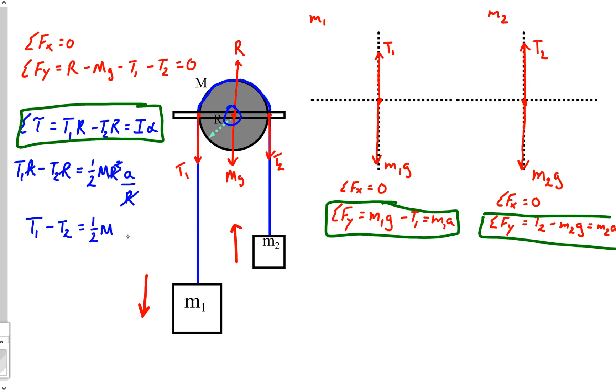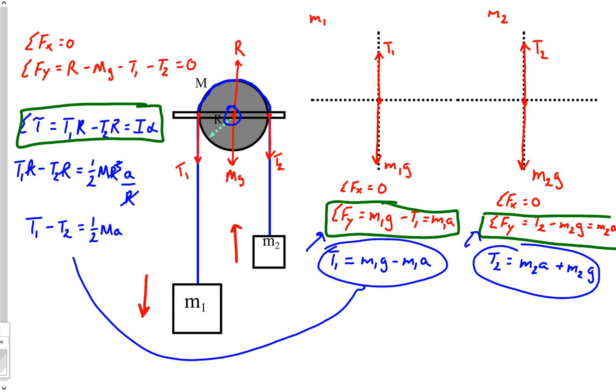So all this torque equation resolves back to is T1 minus T2 equals one half Ma. Now is the time that we need to start putting this together. I'm going to go back to our other two objects. I'm going to solve those for T1 and T2. So I'm going to say that T1 is actually equal to m1g minus m1a, hopefully you can follow that algebra. And then T2 for this other guy, what would that be? m2a plus m2g.